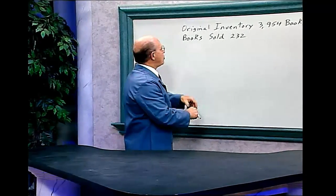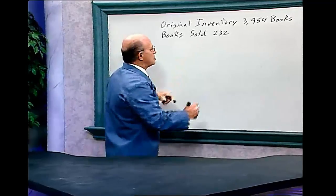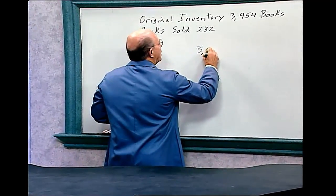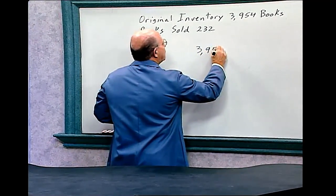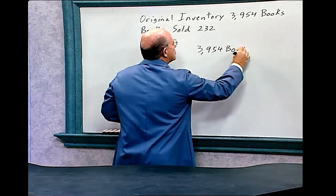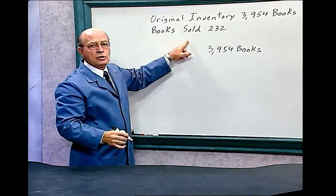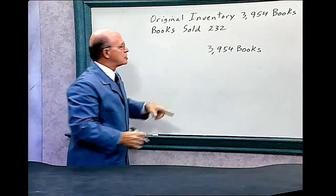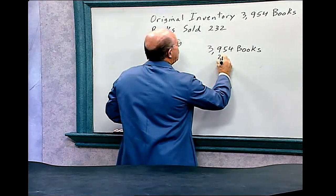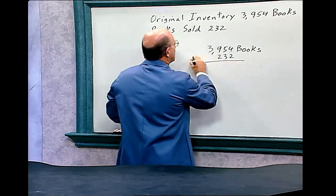The original inventory: we had 3,954 books. Now, we sold 232 books, so we have to deduct that. We have to remove these books from our inventory.